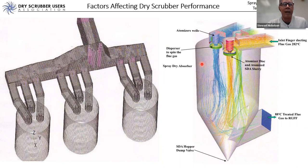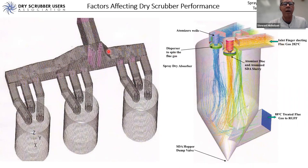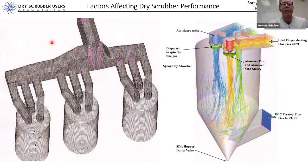Let's look at some basic configurations. This is a 3D model illustration of a dry scrubber with three parallel SDA vessels — the configuration most commonly provided by GE Alstom. This is a triple rotary atomizer arrangement. Flue gas comes in through three individual ducts called finger ducts, each leading to an atomizer well with a gas disperser and an atomizer. When we talk about dispersion, we're referring to how evenly the slurry is being sprayed into that flue gas.